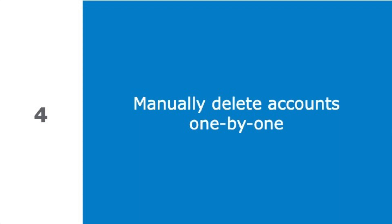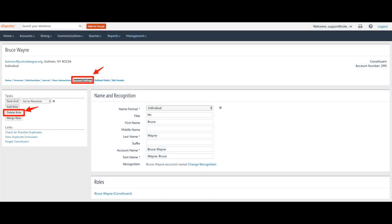Now if you want to remove accounts altogether, you can manually remove accounts one by one from eTapestry. Export the records for any accounts you plan to delete from eTapestry before you start this process. You'll want to archive the data in your organization's shared drive to ensure the data is available if you ever need it in the future. To delete an account, go into each account you want to delete and select delete role from the account settings page. This will permanently delete the account from your eTapestry database. It is important to note that deleting an account is an irreversible action.